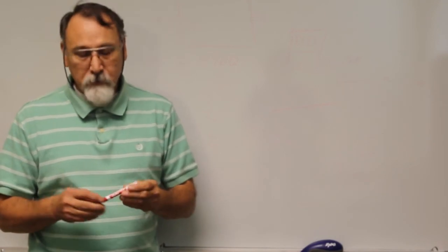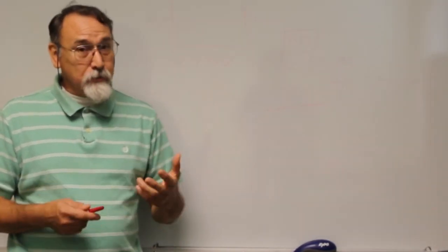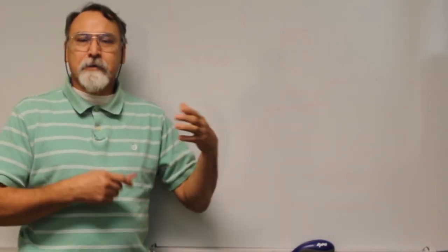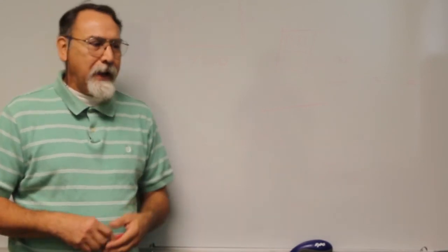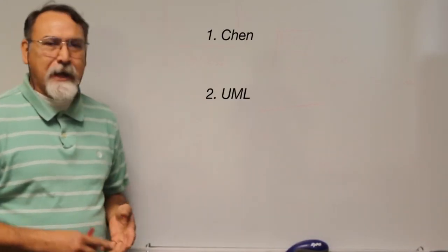As such, also with a database. So as you're building a database, there are graphical representations that are used to indicate how this process will be built. And the three models are called the Chen, the UML, and the Crow.